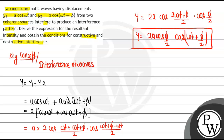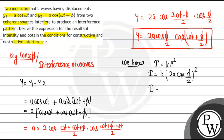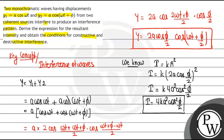Now, the intensity I is equivalent to k times amplitude squared. The amplitude here is 2A cos(φ/2), so I = k times (2A cos(φ/2))² = 4kA² cos²(φ/2). This is the intensity function for the produced interference pattern.